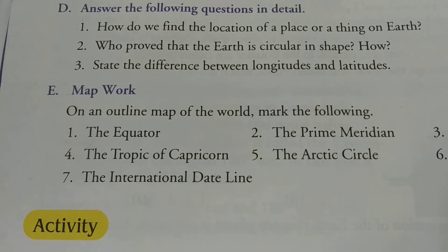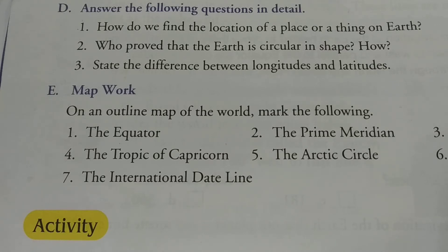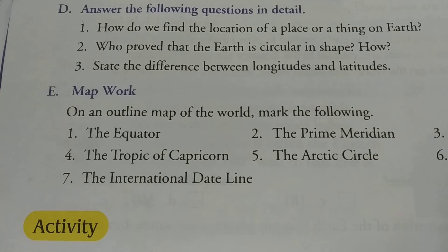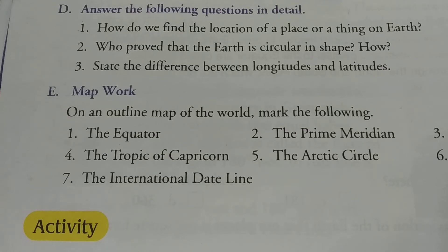Under the longitude column, make a bullet for the first point and write: 'Longitudes are known as meridians.' Full stop. And in the first point of the latitude column, write: 'Latitudes are known as parallels.' Full stop.